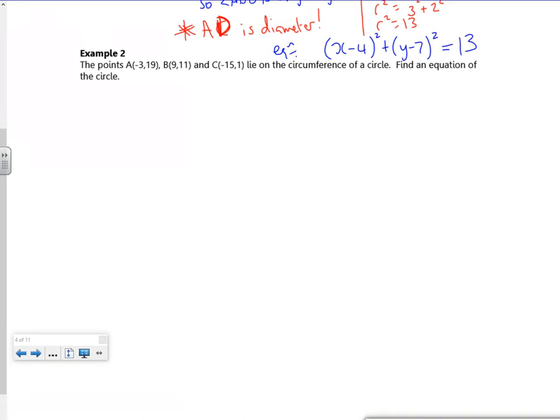Right, you ready for the second example, for the second vid of the second lesson of circles? So it says A, B and C lie on the circumference of a circle. Find the equation of the circle.